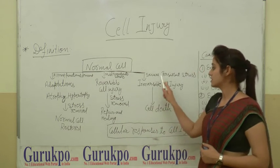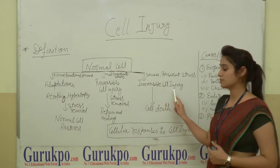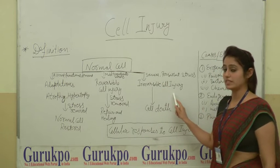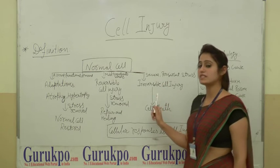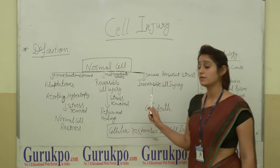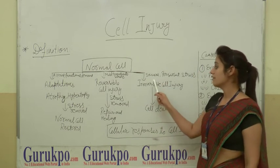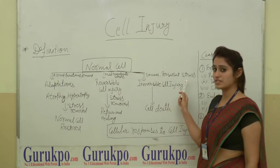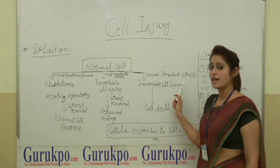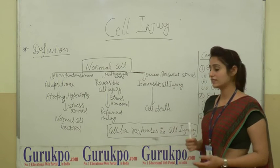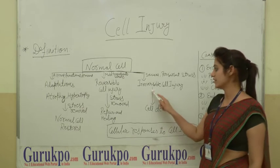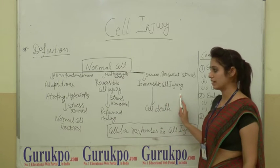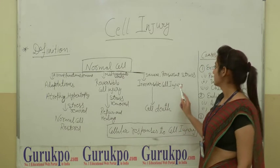Third, Irreversible Cellular Injury. Irreversible Cellular Injury means when the stress is severe and persistent, cell death may occur — that is the Irreversible Cellular Injury.